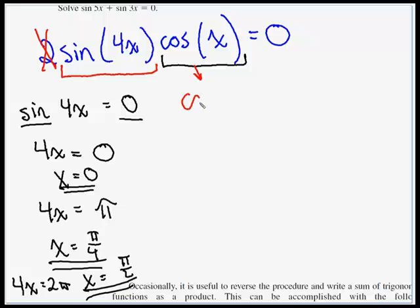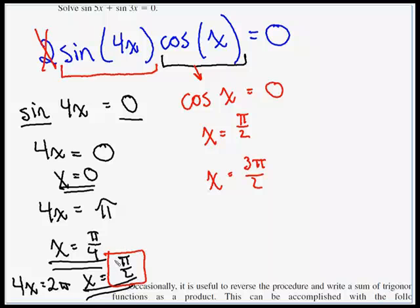Our next term is going to be a little easier. Where does cosine of x equal 0? Well, that happens at the pi over 2, the positive y-axis, and at 3 pi over 2, the negative y-axis. And we do have a repeater. If we forgot to grab this solution out of the first term, we would have found it here in the second term also.